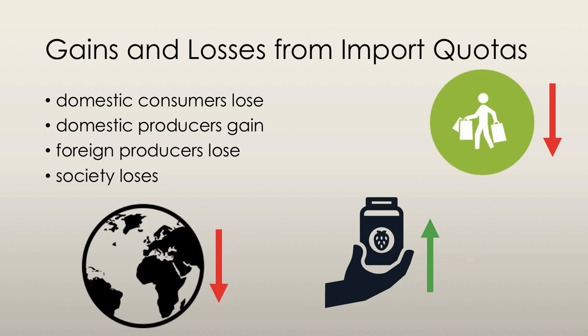Foreign producers lose because they are unable to sell as much of the good. Society as a whole also loses because of the inefficient allocation of resources.